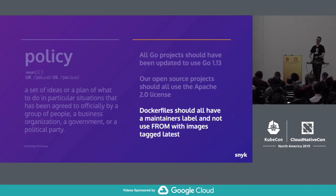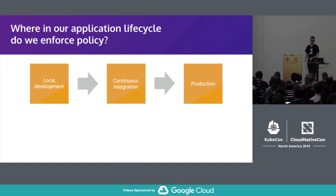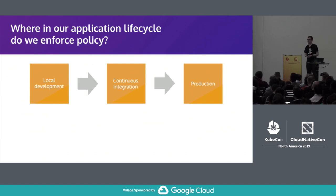Maybe it's that all Docker files should have a maintainer label, we don't use latest tags, whatever it might be. So if that's the sort of working definition of policy, at least for the next half an hour, how might we choose to enforce that in our software pipelines?